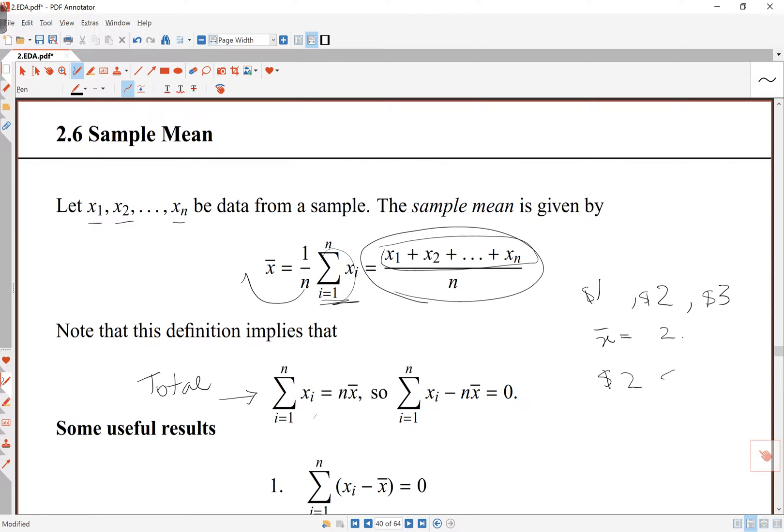Then each of you will have 2 dollars. So all I've done is taking the same amount of money and redistributed this, so everybody has the mean. The total of the amount of money you have here is 6 dollars, and because I've still got the same amount of money over here, this total is 6 dollars still. In other words, if I replace every observation by the mean, as I have over here, the total is the same as I had before. That's what this means here.